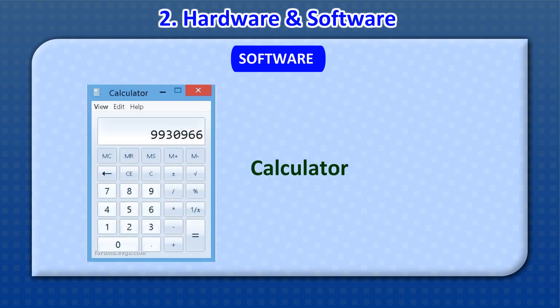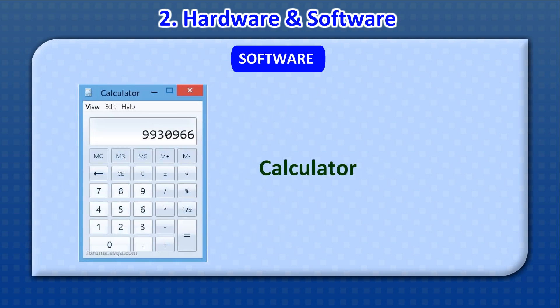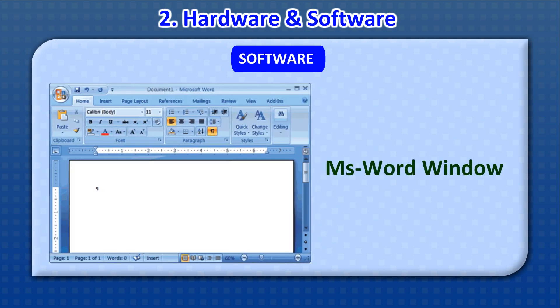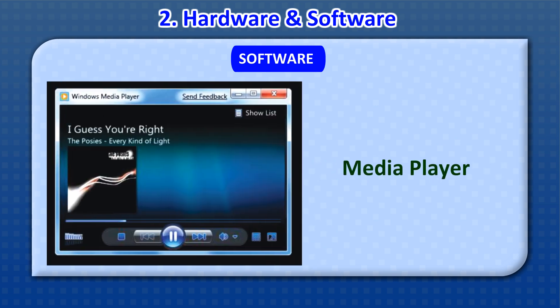Examples of application software include: Paint, Calculator, Adobe Photoshop, MS Word, and Windows Media Player.